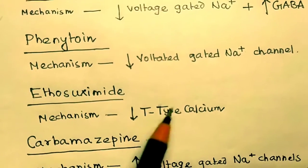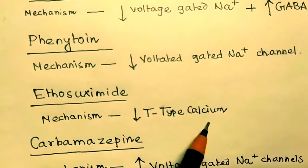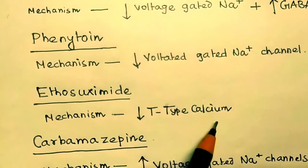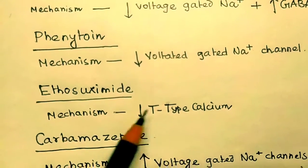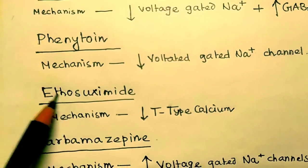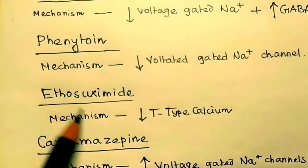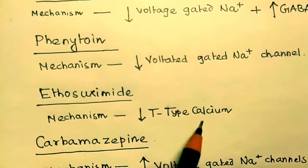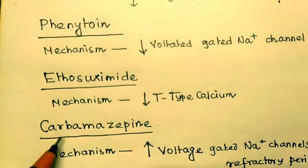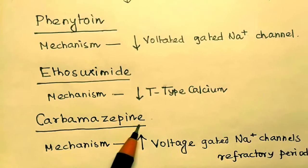The mechanism of ethosuximide is T-type calcium channel decrease. To remember this, think of 'T' for ethosuximide — the 'T' in ethosuximide stands for T-type calcium decrease.